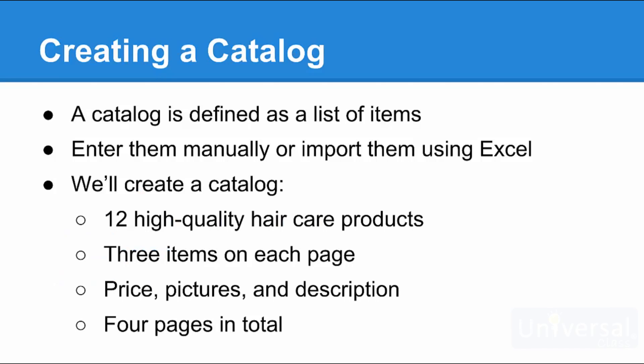A catalog is defined as a list of items. You can create catalogues using Publisher by either creating a list of items or importing a list into Publisher. If you wish to import a list, you will import an Excel spreadsheet. In this lesson, we're going to show you how to create a catalog by creating one of our own. We'll pretend we're a retailer with 12 high-quality hair care products, putting three items on each page, with room for the price, pictures, and description — four pages in all.